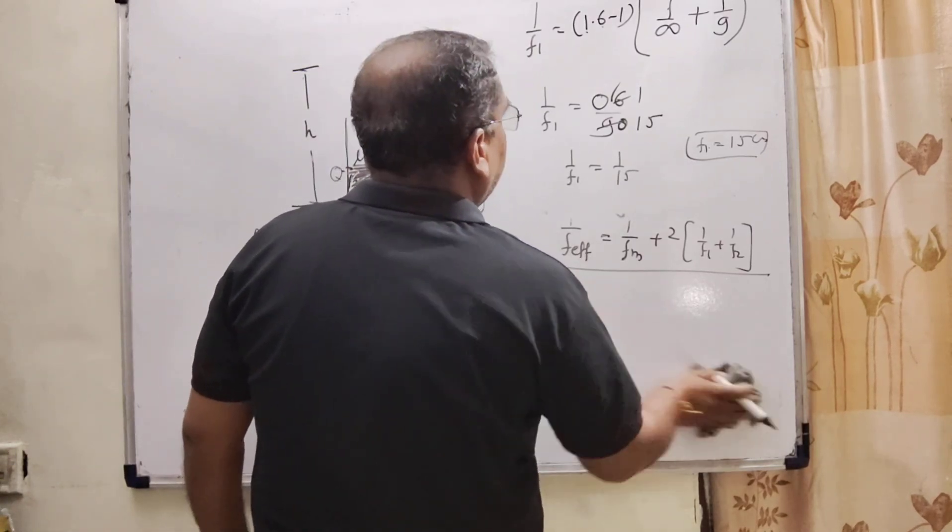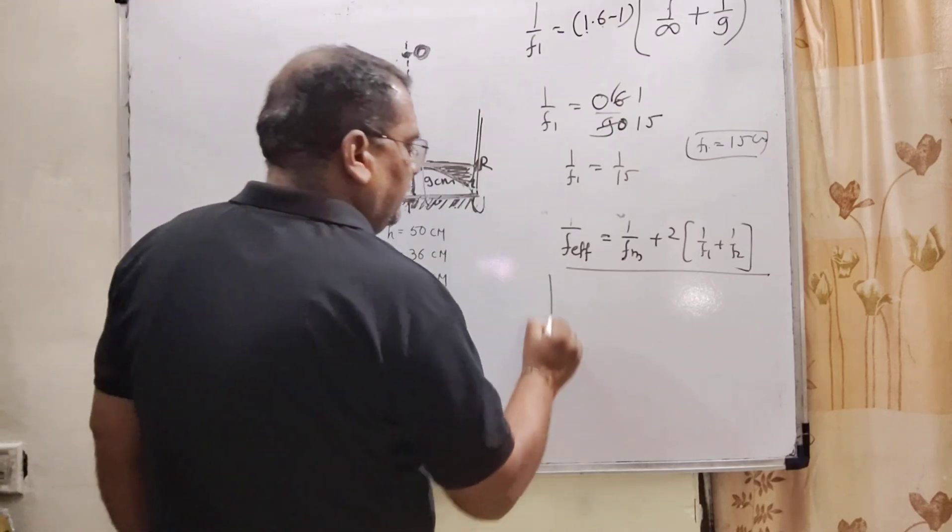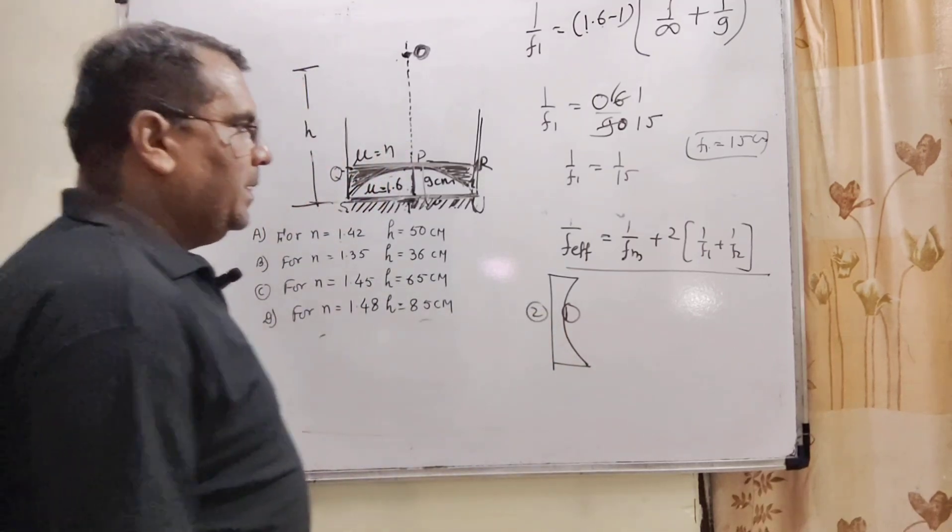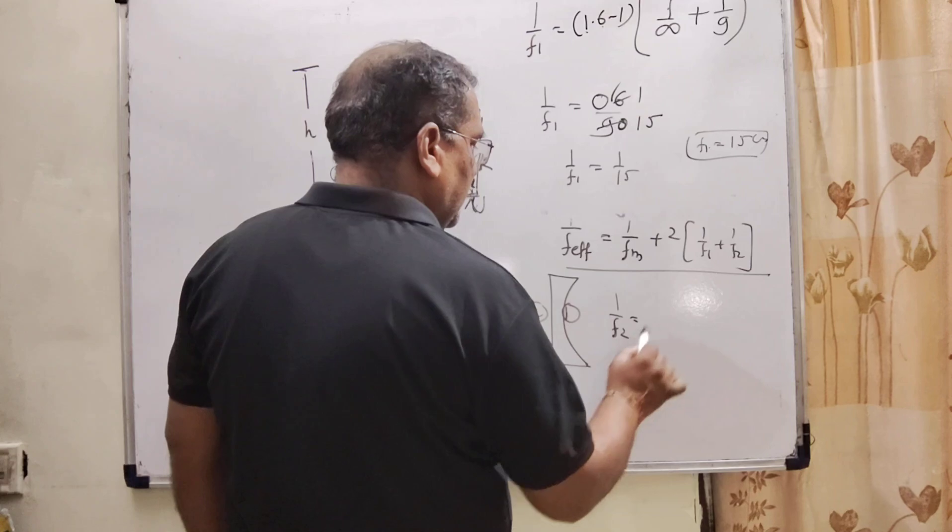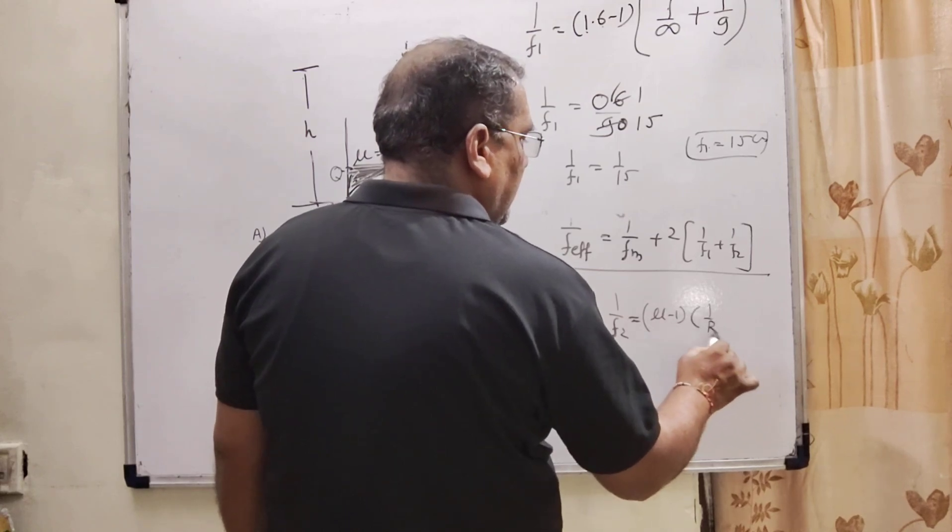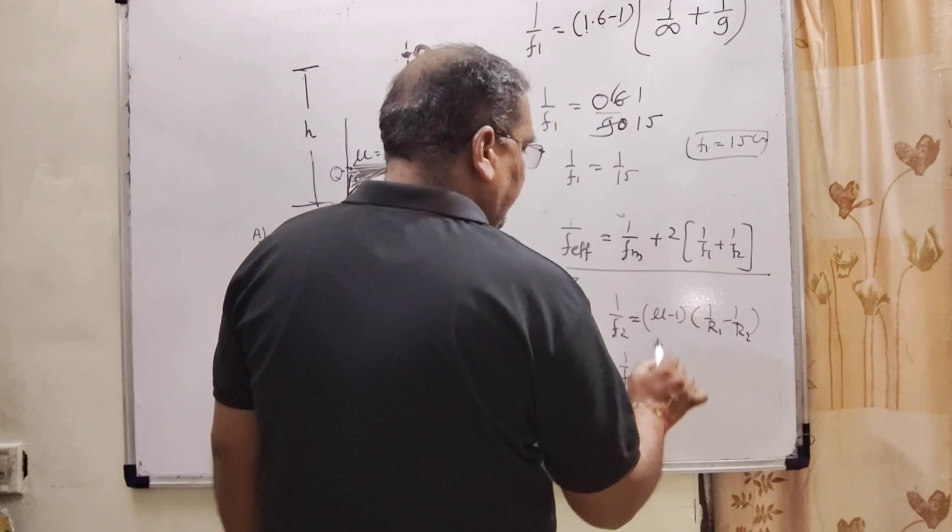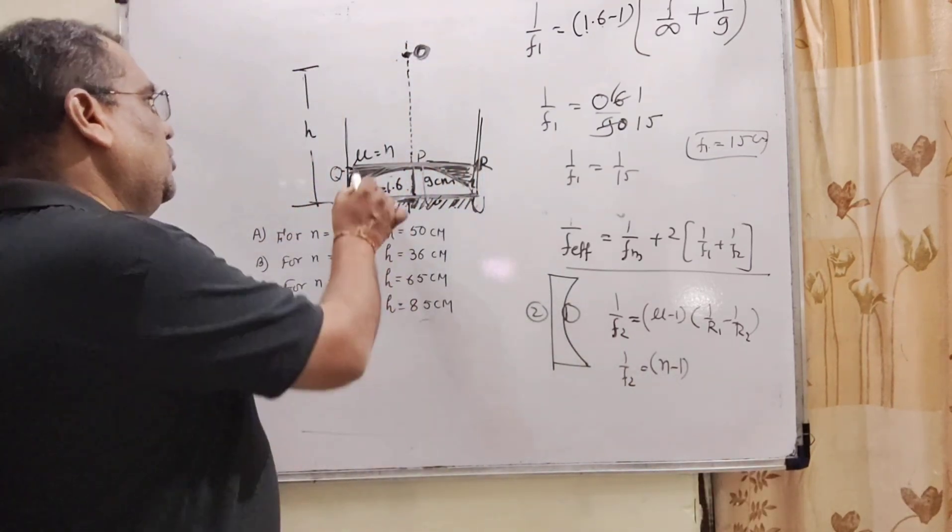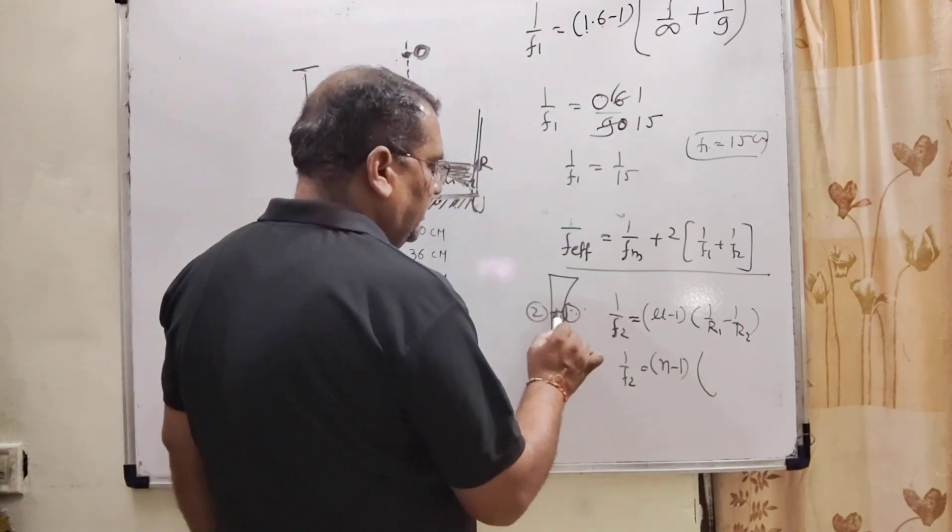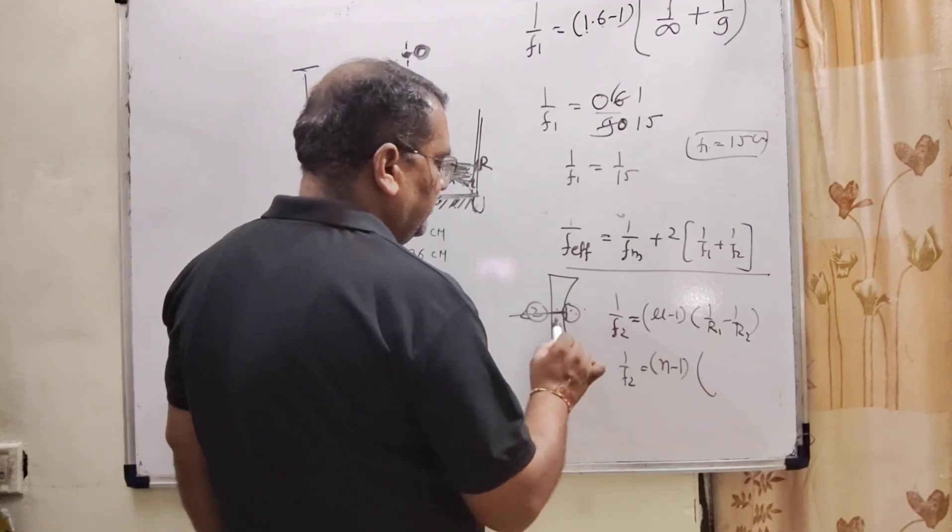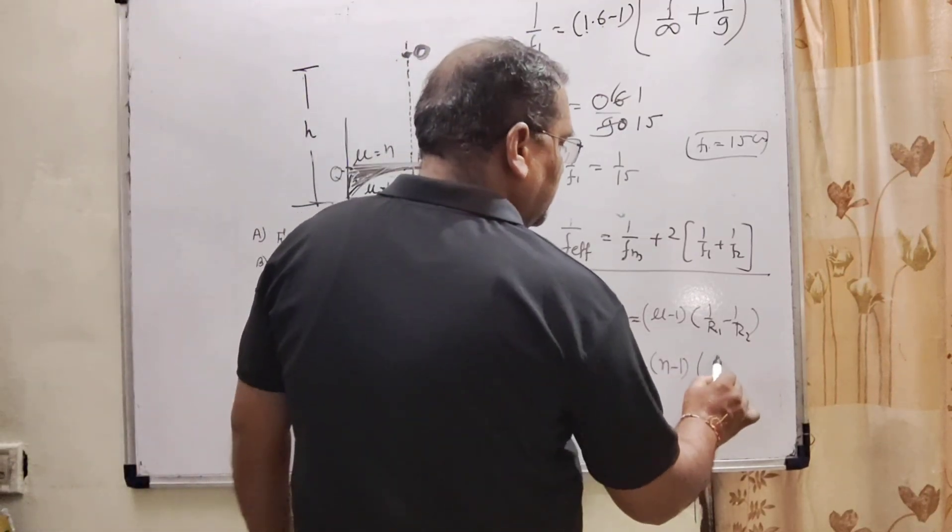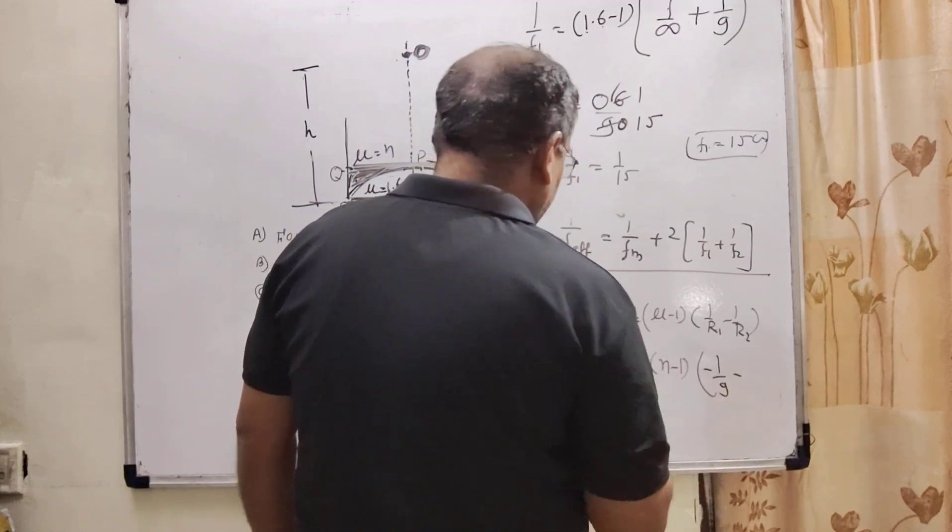For the second lens, again using lens maker formula: 1 by f2 equals mu minus 1 times 1 by r1 minus 1 by r2. In the place of mu we put n minus 1. This first surface r1, the rays reach from here, direction right to left, and we measure from the pole. This is negative, so minus 1 by 9.